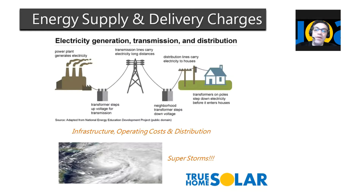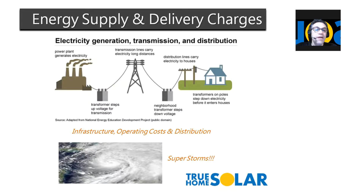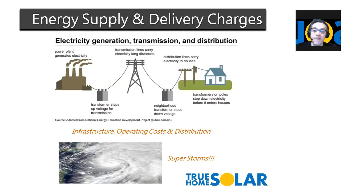And what happens when we get hit by another big superstorm, which seems to happen more frequently than not? These superstorms are causing havoc on our infrastructure, and we keep putting band-aids on a broken and fragile system. Costs keep rising. We're still paying for Hurricane Sandy and other similar devastations across our country.